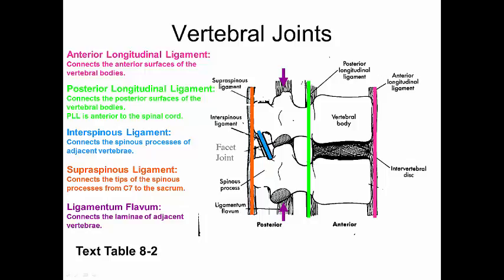In the middle you have the interspinous ligament, which goes between spinous processes and runs from superior to inferior, from posterior to anterior. And then you have the ligamentum flavum, which connects the lamina of adjacent vertebra — which is very hard to see in this image.